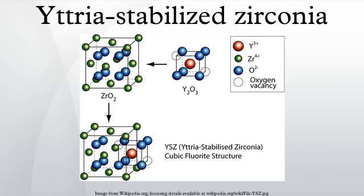Yttria-stabilized zirconia is a ceramic in which the crystal structure of zirconium dioxide is made stable at room temperature by an addition of yttrium oxide. These oxides are commonly called zirconia and yttria, hence the name.